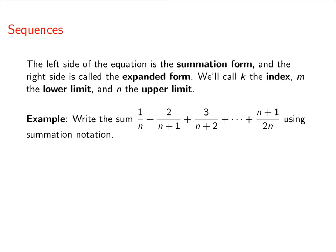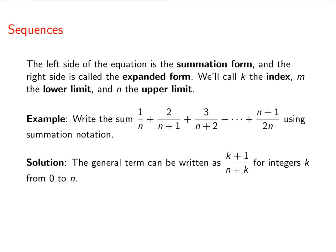There's lots of different ways of doing this depending on how you index it. One way is to see that the general term can be written as k plus 1 over n plus k, where the integers k go from 0 to n.